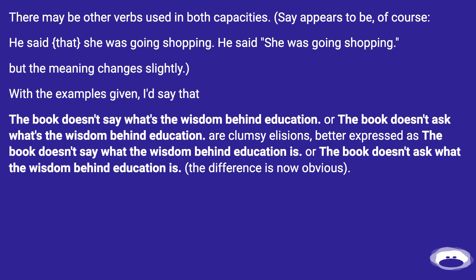There may be other verbs used in both capacities. Say appears to be, of course. He said that she was going shopping. He said she was going shopping. But the meaning changes slightly.